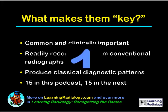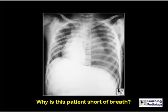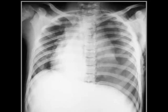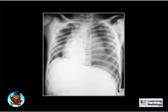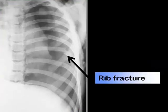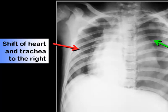This is Diagnosis 1. Why is this patient short of breath? There is a tension pneumothorax present. There are rib fractures on the left side, and there is a large left-sided pneumothorax which is under tension. There is a shift of the heart and the trachea to the right.